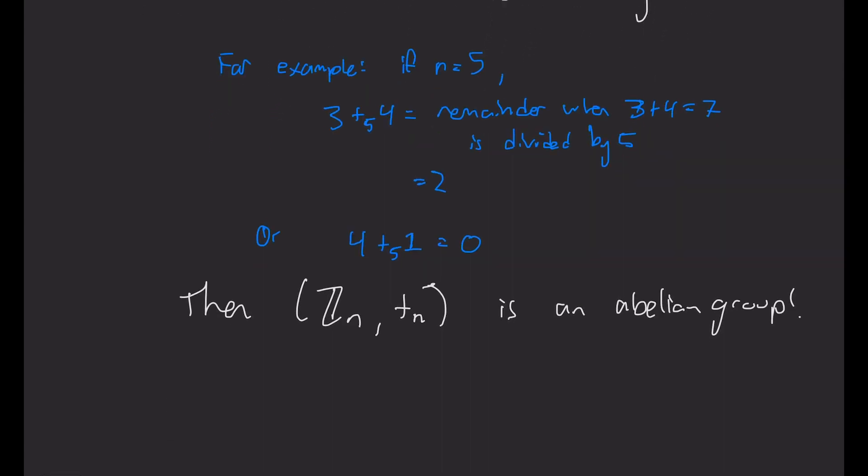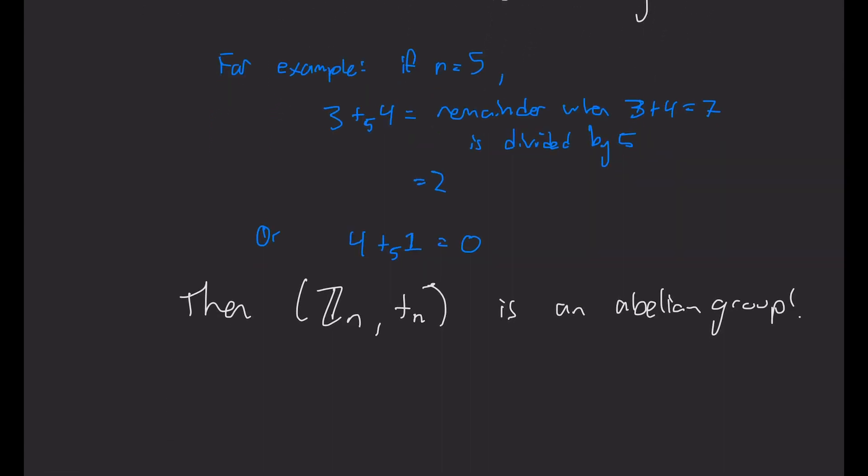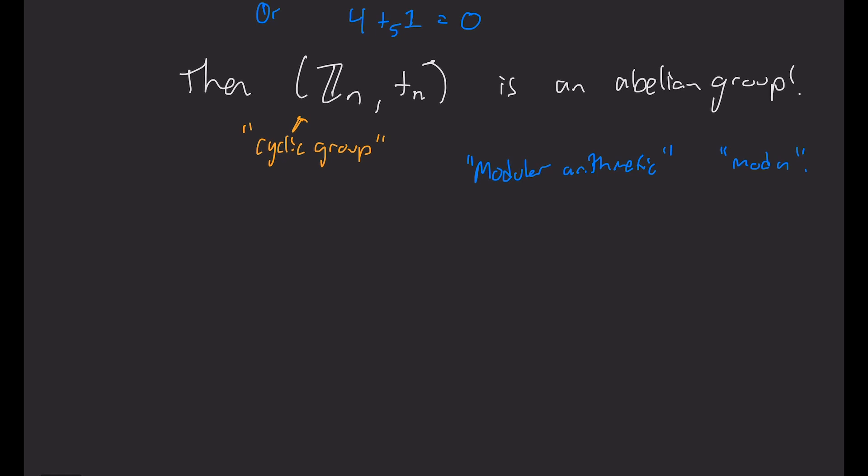Then I claim this pair is an abelian group. So Z_n with plus sub n is an abelian group. So we give this guy a name. We call this a cyclic group. It has special relations with rotational symmetries of n-gons. And this is the place where we do modular arithmetic, or we sometimes call this mod n. We'll come back to this in a future video.